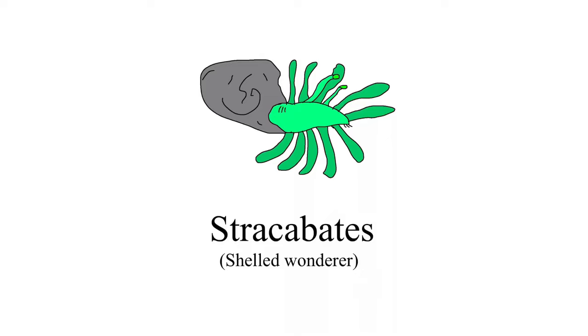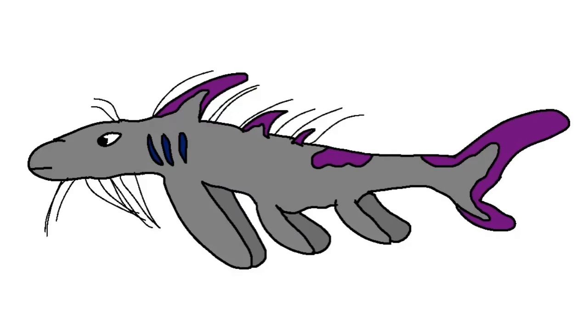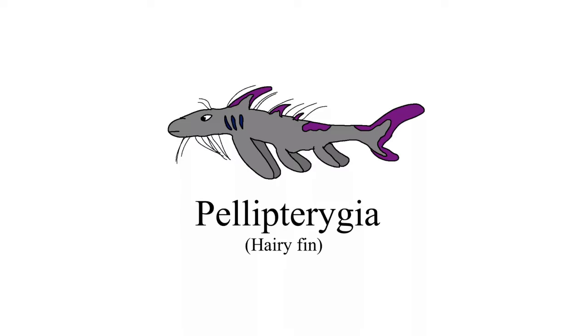They may also have mechanoreceptors in their dulcel fins and back to sense vibrations in the water and be able to avoid predators. I'll call them Pelopterygia, and they'll appear 9.7 million years into the timeline.